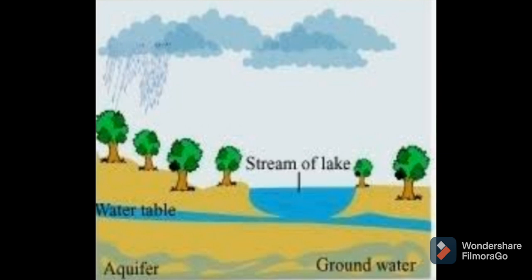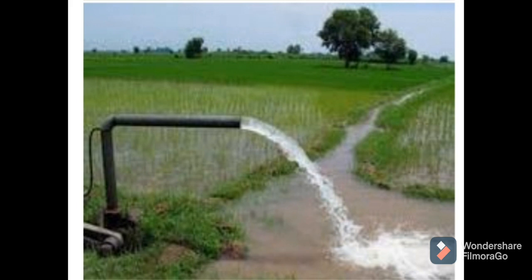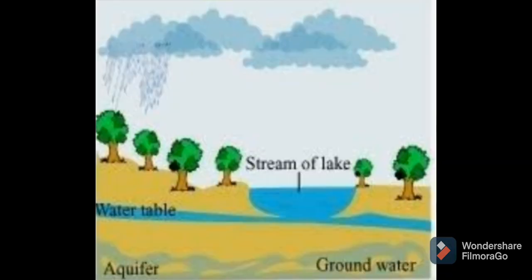Water in the aquifers can usually be pumped out with the help of tube wells and hand pumps. These rocks are also porous in nature, so water gets collected here too — as you can see in the diagram. Water seeps into the hard rock layer and is collected between the layers of hard rock — that is called an aquifer.